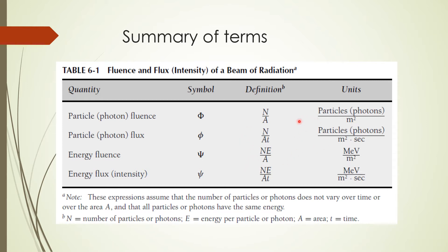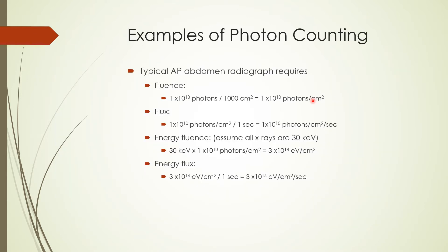Let's look at a simple example of how these terms are used. If a typical AP abdomen radiograph requires 1 times 10 to the power 13 photons in an area of 1,000 square centimeters, then we can calculate the fluence, which is n divided by A, giving a result of 1 times 10 to the power 10 photons per square centimeter. If this fluence passes through this area in one second, we can calculate flux by dividing this quantity by one second. We can also calculate energy fluence if we assume all x-rays are of 30 keV, by multiplying 30 keV by the fluence, and similarly calculate energy flux by multiplying 30 keV by the flux.